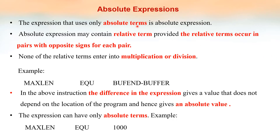Absolute expressions — absolute means constant. If the value of an expression, once evaluated, gives a constant, then that expression is an absolute expression. If instead we get a variable value, then it is called a relative expression. So, an absolute expression can be an expression which contains only absolute terms. For example, the instruction MAXLIAN EQU 1000 — the operand value is a constant, so it is an absolute expression.